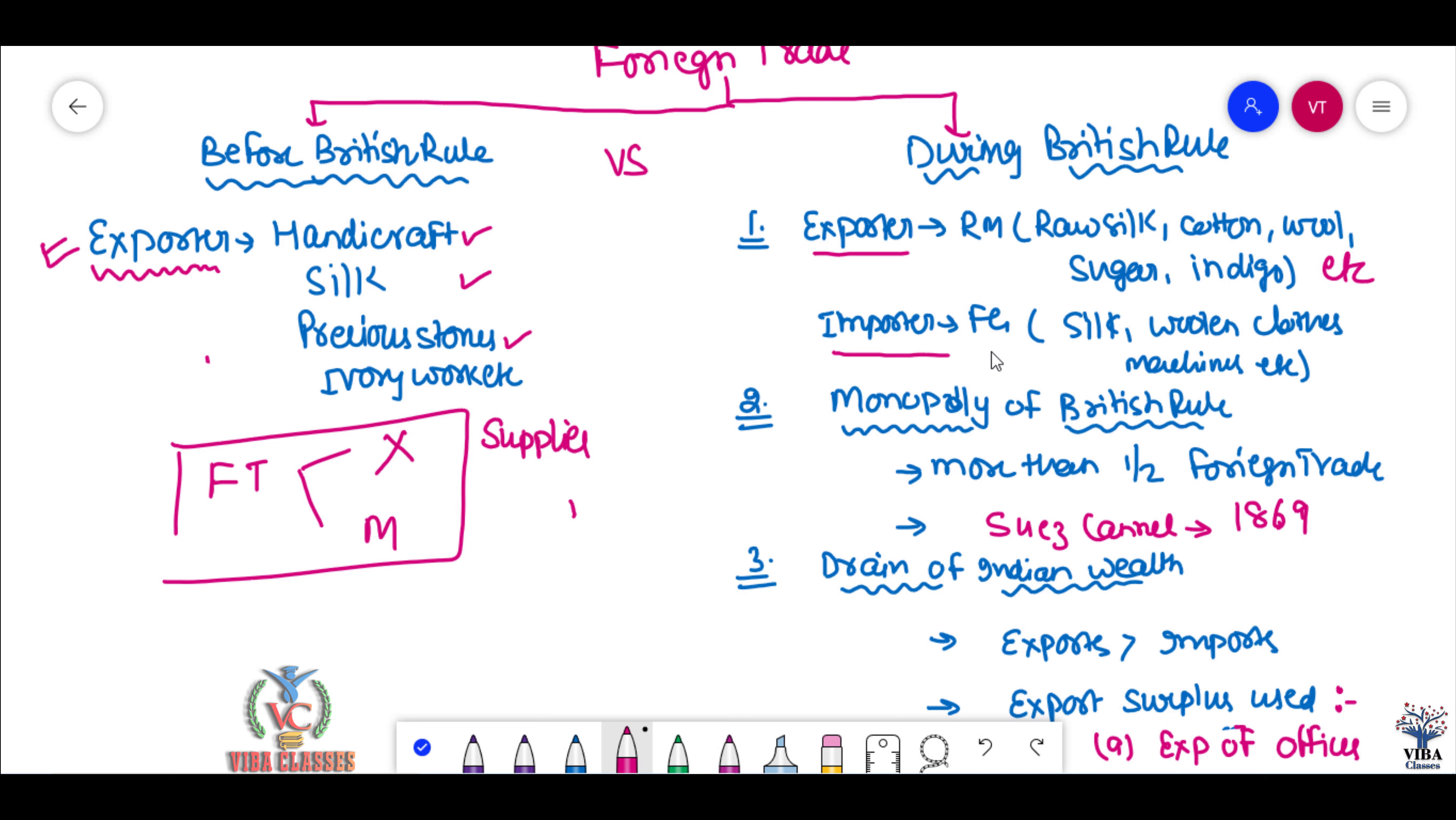We are the suppliers of raw materials. On the other hand, we import finished goods: silk, woolen cloths, machines, etc. Definitely, these things were costly as compared to raw materials.